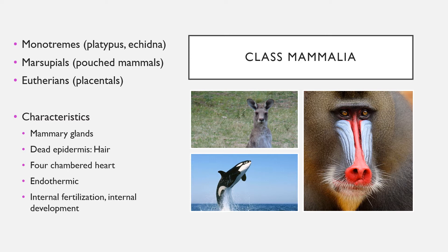As a reminder, we're discussing organisms in the class Mammalia. We have three groups: the monotremes, the marsupials, and the eutherians. Monotremes are found in Australia and Papua New Guinea, such as the platypus and the echidna. Marsupials such as kangaroos, wallabies, and possums have a pouch where their offspring crawl into before feeding. And then you have the largest group, eutherians, which are the placental organisms.